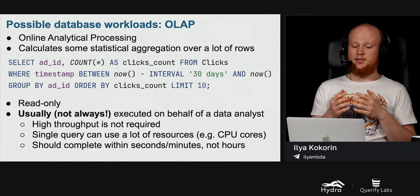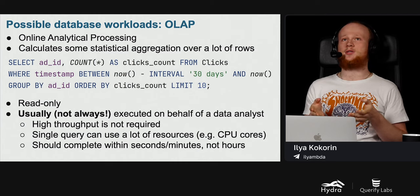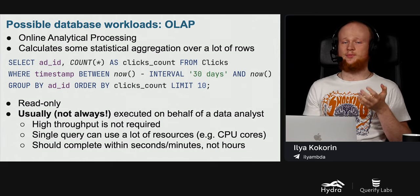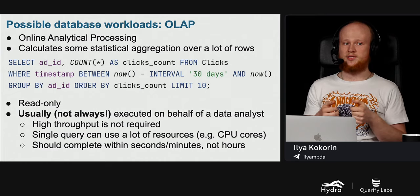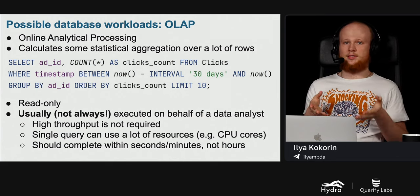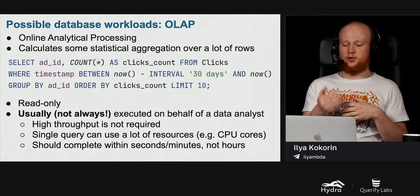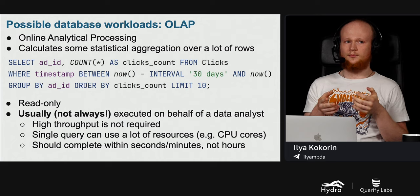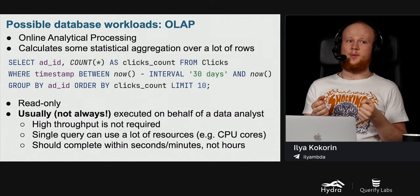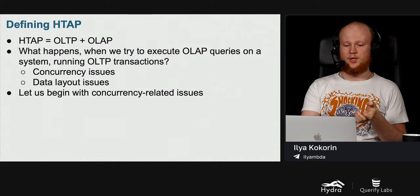OLAP queries are read-only, and usually executed on behalf of a data analyst. Thus, high throughput is not required because we can't have millions of data analysts. A single OLAP query can use a lot of resources — multiple CPU cores, a lot of memory, network and disk bandwidth. However, such queries should complete within seconds or minutes, not hours, because otherwise our data understanding will be very poor. In some cases, OLAP queries are also executed on behalf of ordinary users, in which case high throughput is required. So what is HTAP? It is basically a combination of OLTP transactions and OLAP queries.